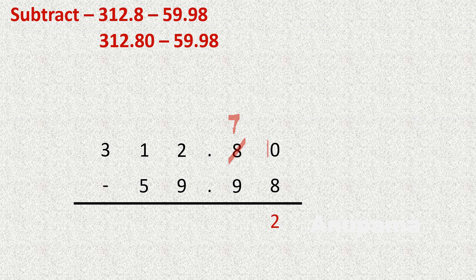Now in the tenths column, 7 is less than 9, so we take a borrow. The ones digit becomes 1 and the tenths become 17. So 17 minus 9 equals 8. We write the decimal point as it is. Now in the ones column, 1 is less than 9, so we take a borrow from the tens digit, making it 0, and the ones become 11.